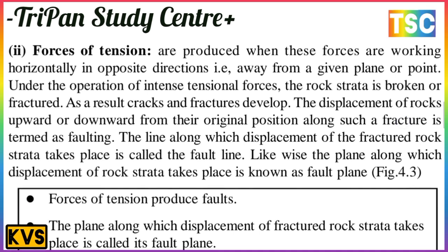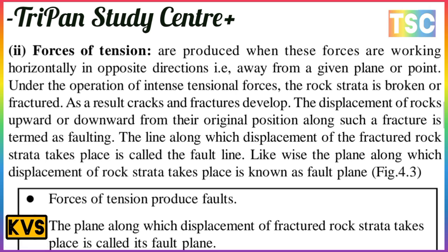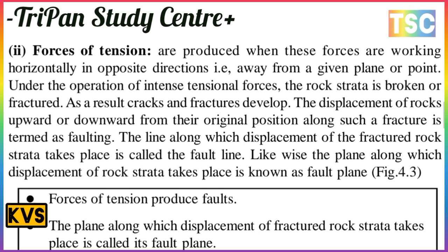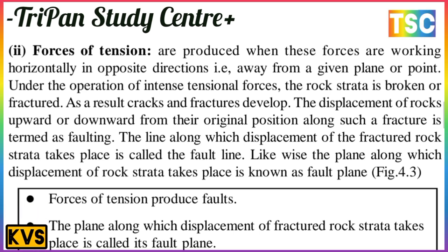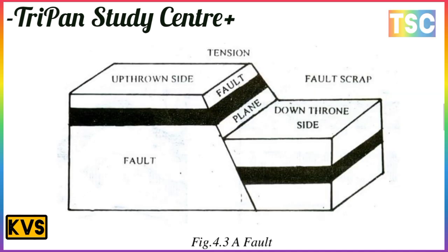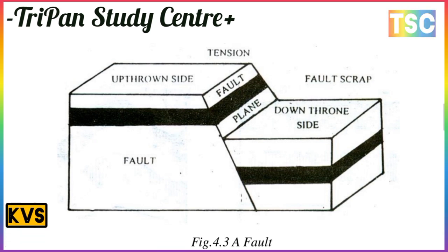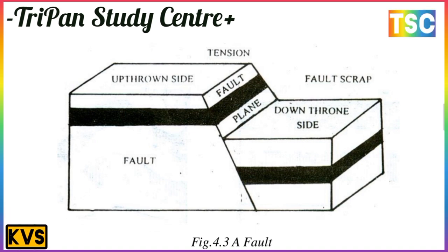The plane along which displacement of rock strata takes place is known as the fault plane. The force of tension produces a fault, and the plane along which displacement of fractured rock strata takes place is called the fault plane. The diagram shows a fault with the tension, fault plane, scraps, and displacement on one side.